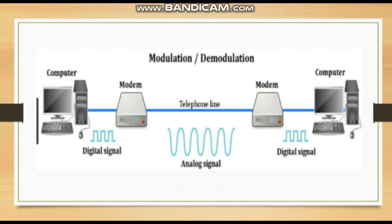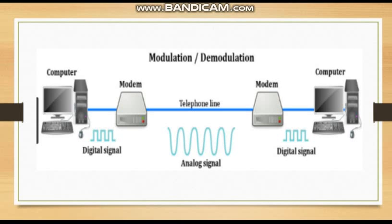Today we have learnt the meaning of network and how they get connected. There are two ways of networking: wired network and wireless network. Dear students, we will learn in detail in the next session about wireless and wired networks. Till then, thank you and have a nice day.